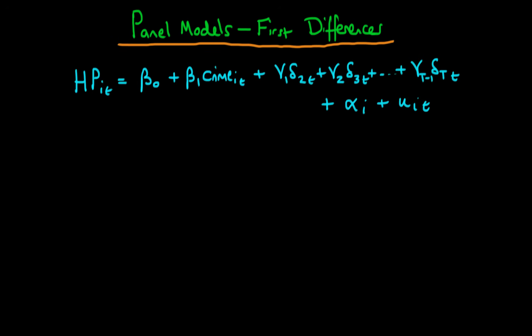In this video I want to talk about one particular type of panel model estimator which circumvents the problem of unobserved heterogeneity, and that is the technique of first differences, or something which we refer to as a first differences model.